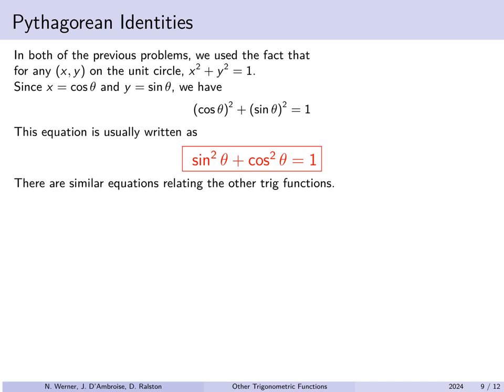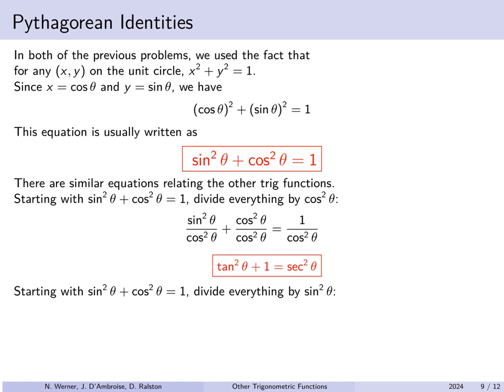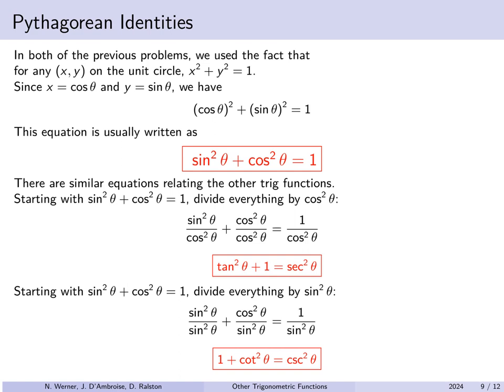There are similar equations that relate some of the other trigonometric functions. Starting with sin²θ + cos²θ = 1, if we divide both sides by cos²θ, we get (sin θ/cos θ)² + 1 = 1/cos²θ. In other words, tan²θ + 1 = sec²θ. Had we divided everything by sin²θ instead, we would similarly get 1 + cot²θ = csc²θ.